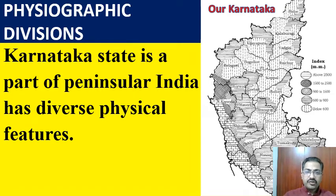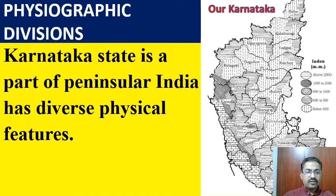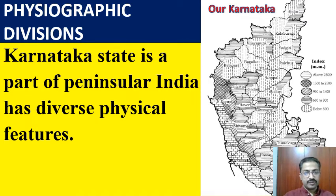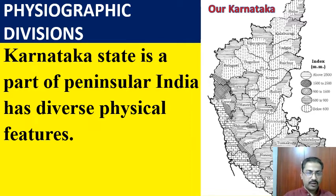You have already studied the origin of the word Karnataka and other features like latitude and longitude about Karnataka. Now, Karnataka is a part of Peninsular India. It is situated in the southwestern part of India and has diverse physical features. You have coastal regions, Maidan regions, and also the Western Ghats, that is the Malanadu region. In this lesson, we need to know all those different features - the relief features of Karnataka.